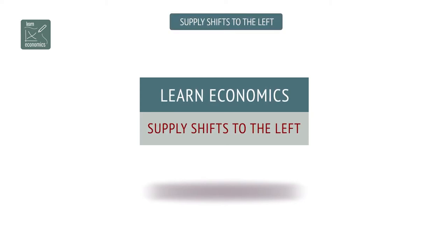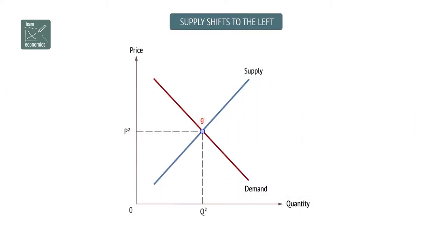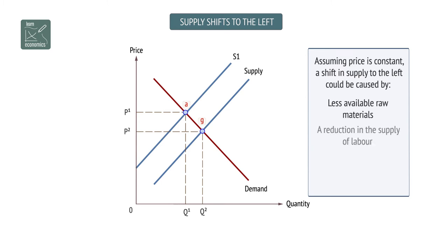A shift to the left is a decrease in supply. Assuming the price is constant, a shift in supply to the left could be caused by less available raw materials, a reduction in the supply of labor, taxes on goods or services, or bad weather or other disruptive natural events.